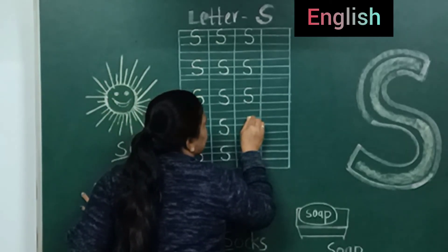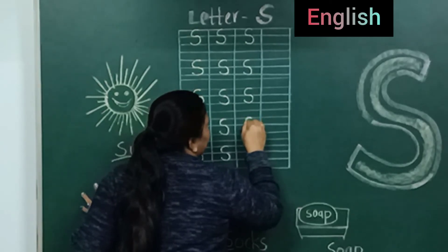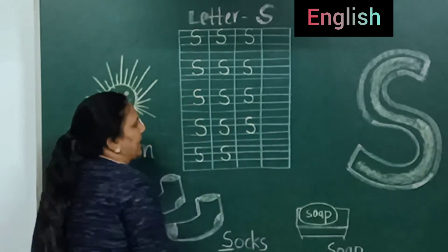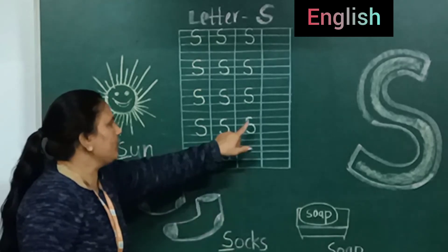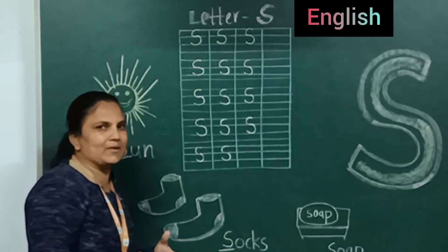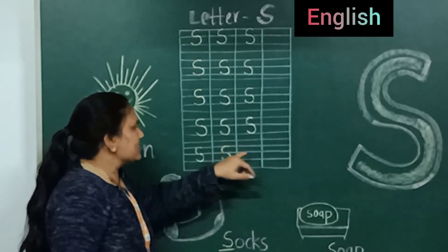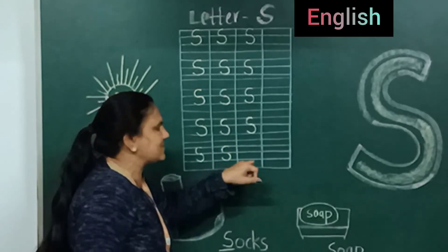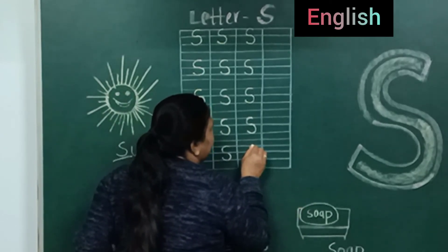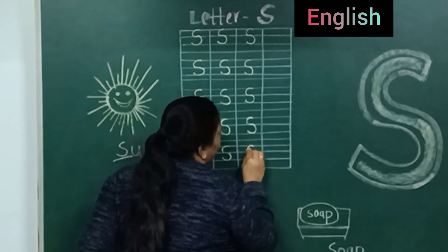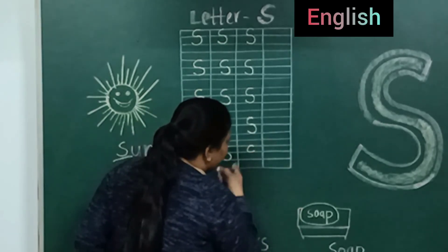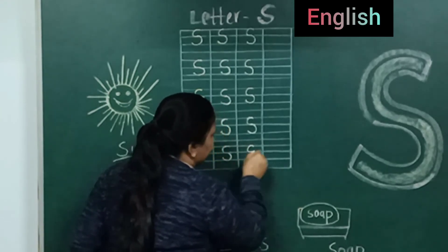First, put your pencil on the red line and we will make a curve to the first blue line. And then we will make another curve to the second blue line. Which letter is this? Letter S. Speak and write, okay. This is the red line, this is the first blue line, and this is the second blue line. Put your pencil on the red line and do the curve like C.